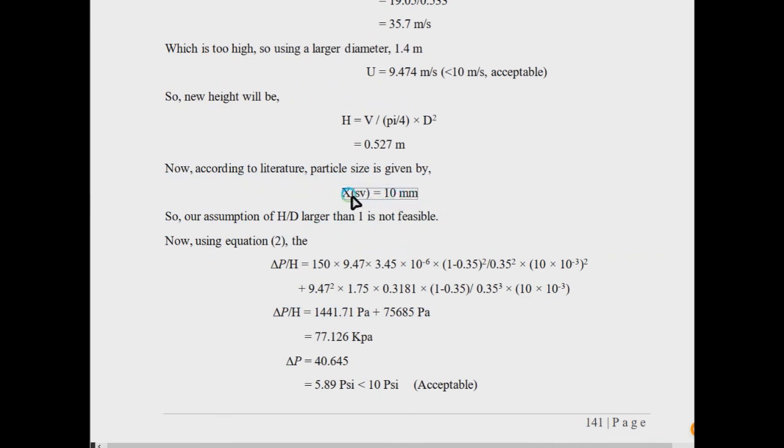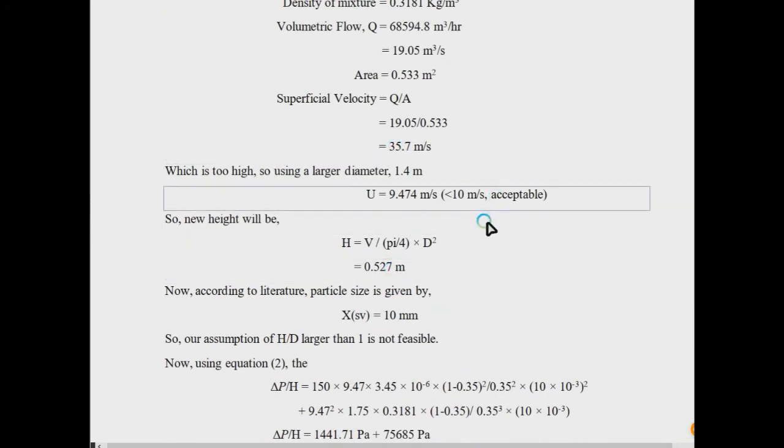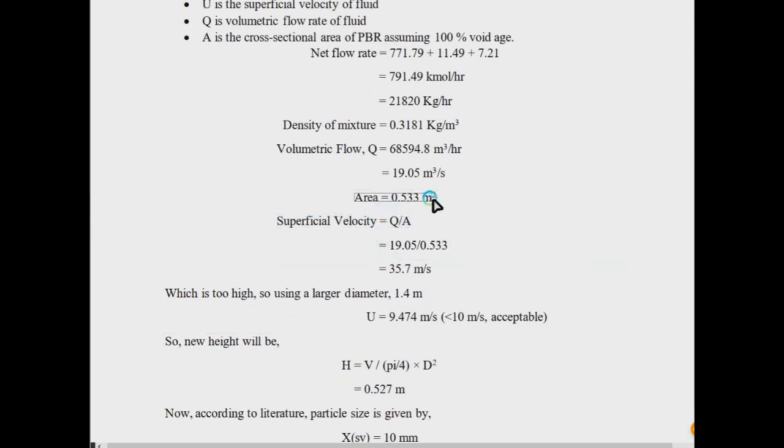Something you will observe is the catalyst particle diameter. Sometimes you have obtained a PSD (particle size distribution) and you want to know what catalyst size to select. The optimum would be in the range of 50 to 60 percent mesh size. Like you have particles of 1 to 10 millimeter and your 50 to 60 percent size lies in 5 to 6 millimeter, you should choose that based on the cumulative mesh diagram. I have here 10 millimeter taken from literature. The pressure drop is calculated and the design is completed.